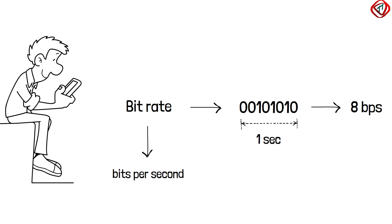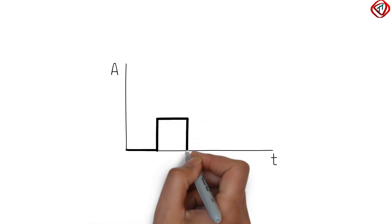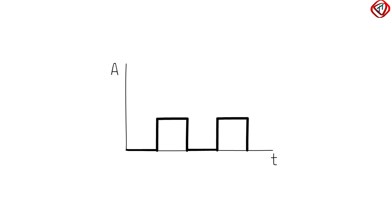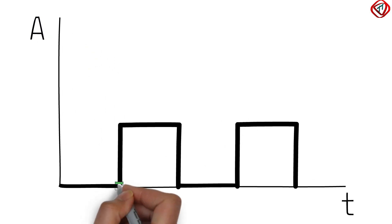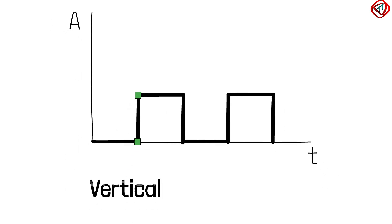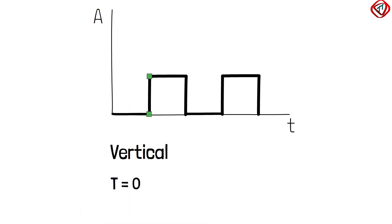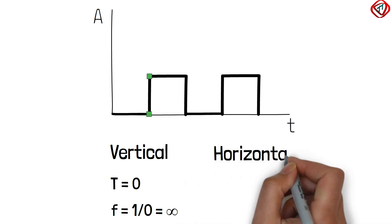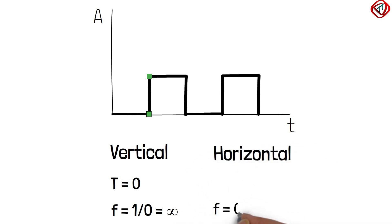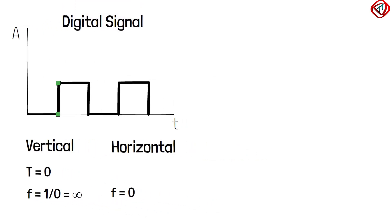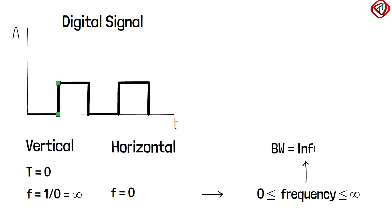A digital signal is represented by vertical and horizontal lines in the time domain. In vertical lines, the signal changes its state from low to high in no time — that is, time period is 0. Since frequency is the inverse of time period, frequency comes out to be infinite. In the case of horizontal lines, the frequency remains 0. So in a digital signal, frequency ranges from 0 to infinity, which means a digital signal has infinite bandwidth. As it contains infinite frequencies, it is a composite signal as well.